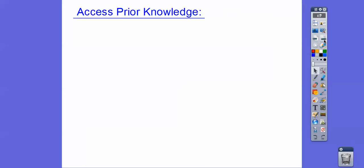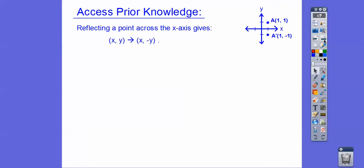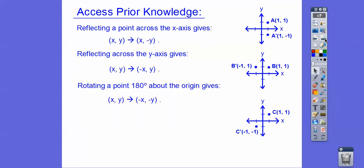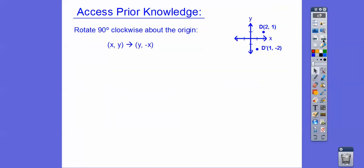Let's access some prior knowledge from Integrated Math 1. When we reflect over the x-axis, (x, y) becomes (x, −y). When we reflect over the y-axis, (x, y) becomes (−x, y). When we rotate 180 degrees, (x, y) becomes (−x, −y). And when we rotate 90 degrees clockwise, (x, y) becomes (y, −x).